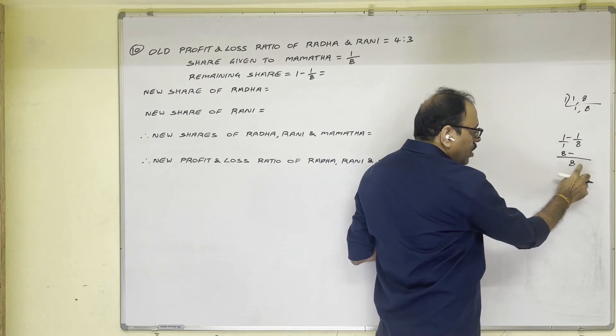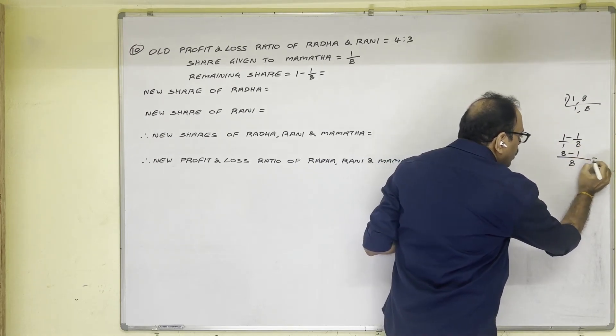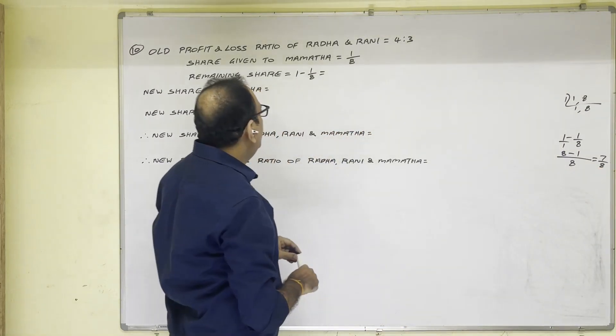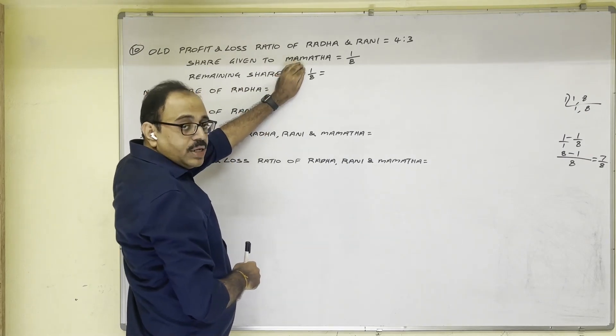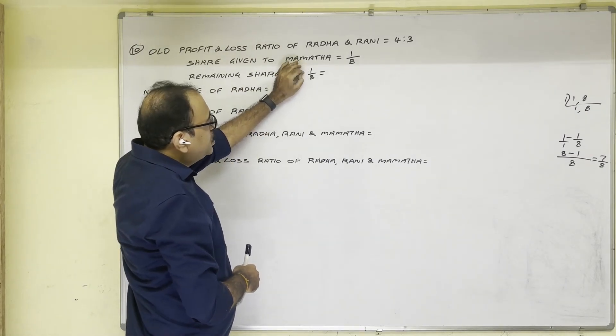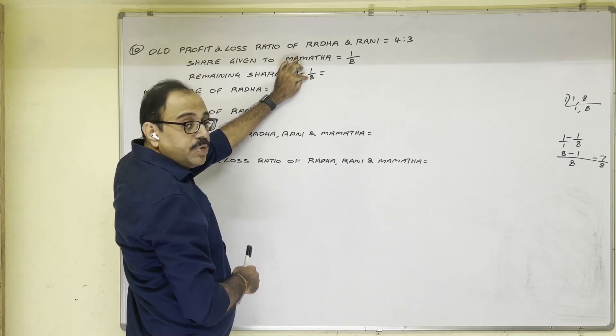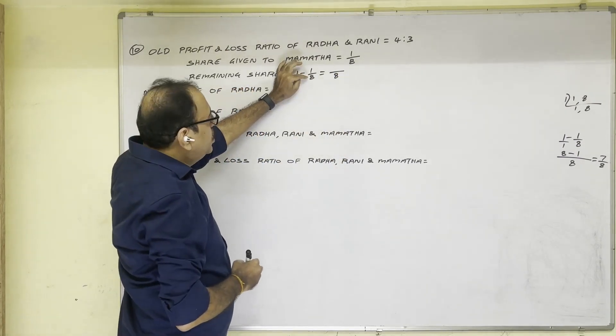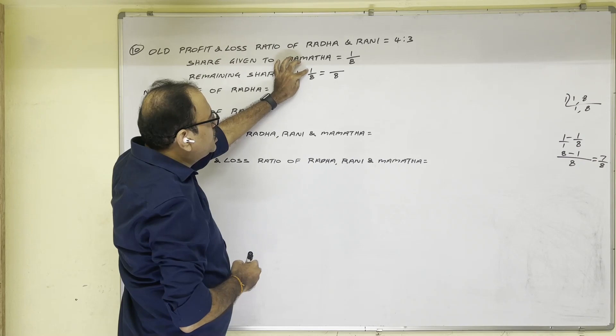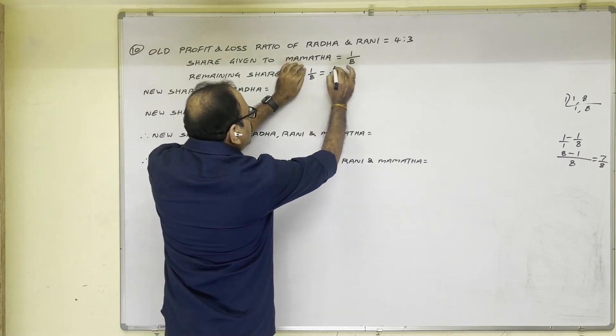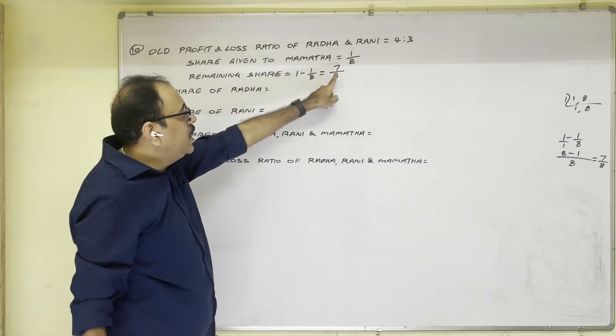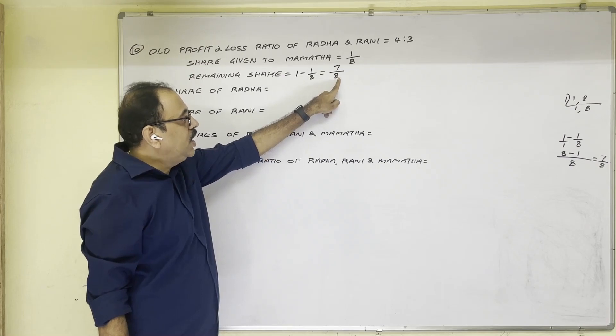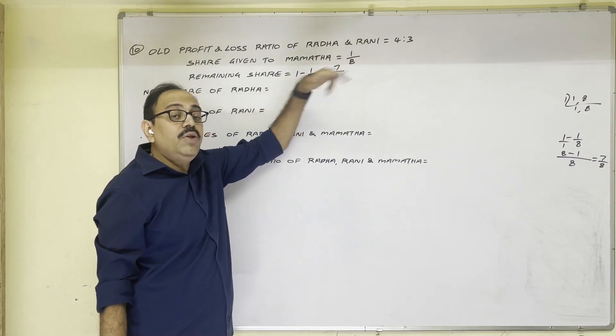But you need not do like this. Forget about this one minus one by eight. Here one is numerator, eight is denominator. So write denominator as it is, and denominator minus numerator, eight minus one equals seven in numerator. So directly we can write like that. So the remaining share is seven by eight. Now this share Radha and Rani have to take in future.